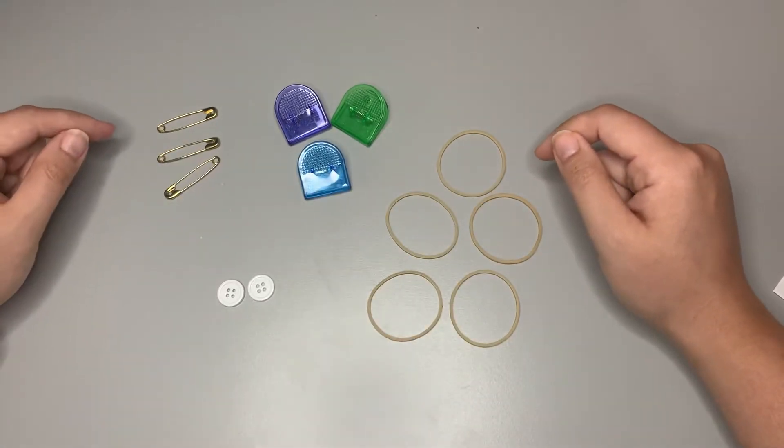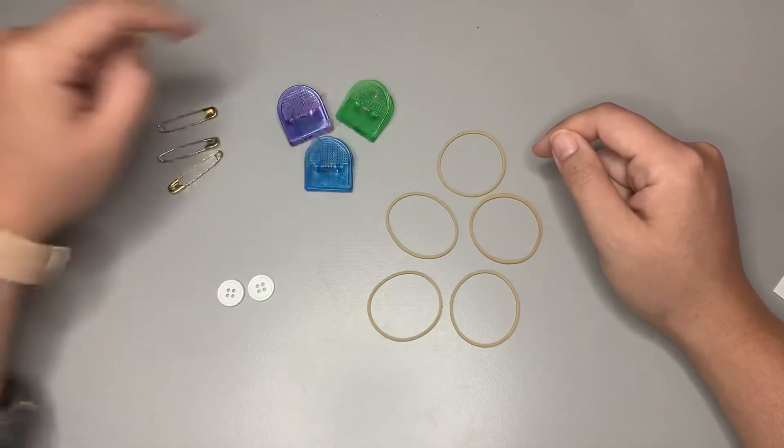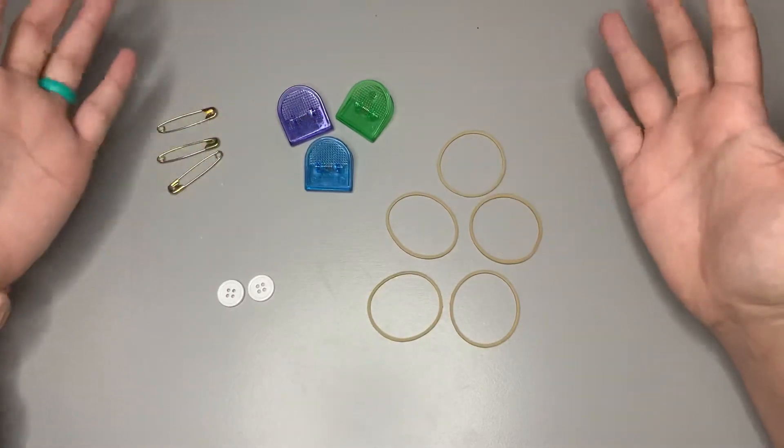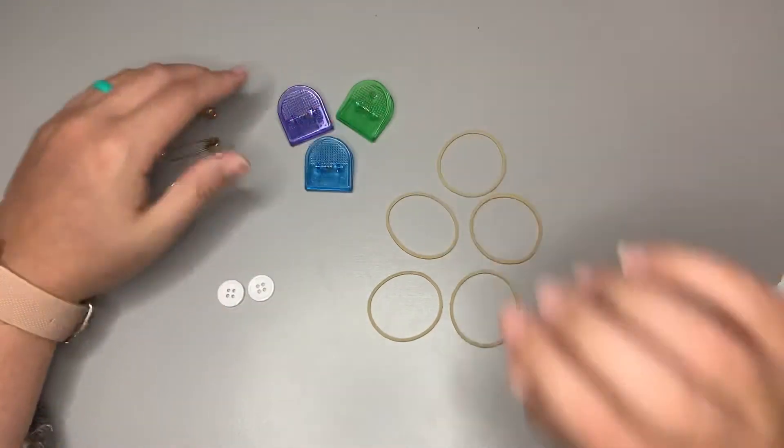So let's see three and I have one, two, three here. So I have the rubber bands is what I have the most of. I have more rubber bands than I have anything else.